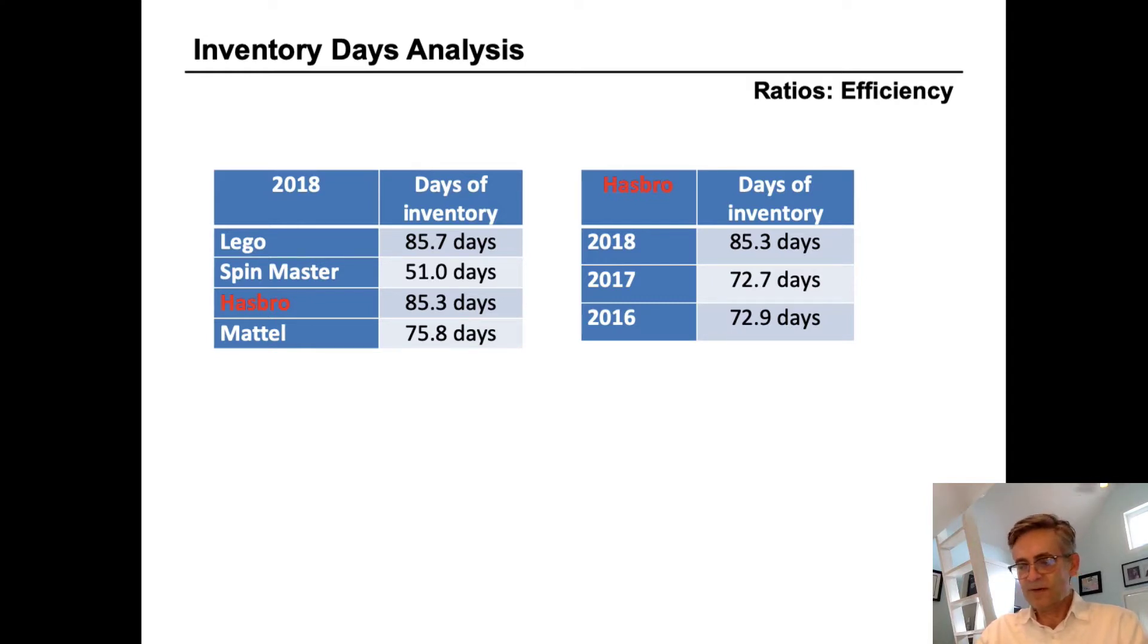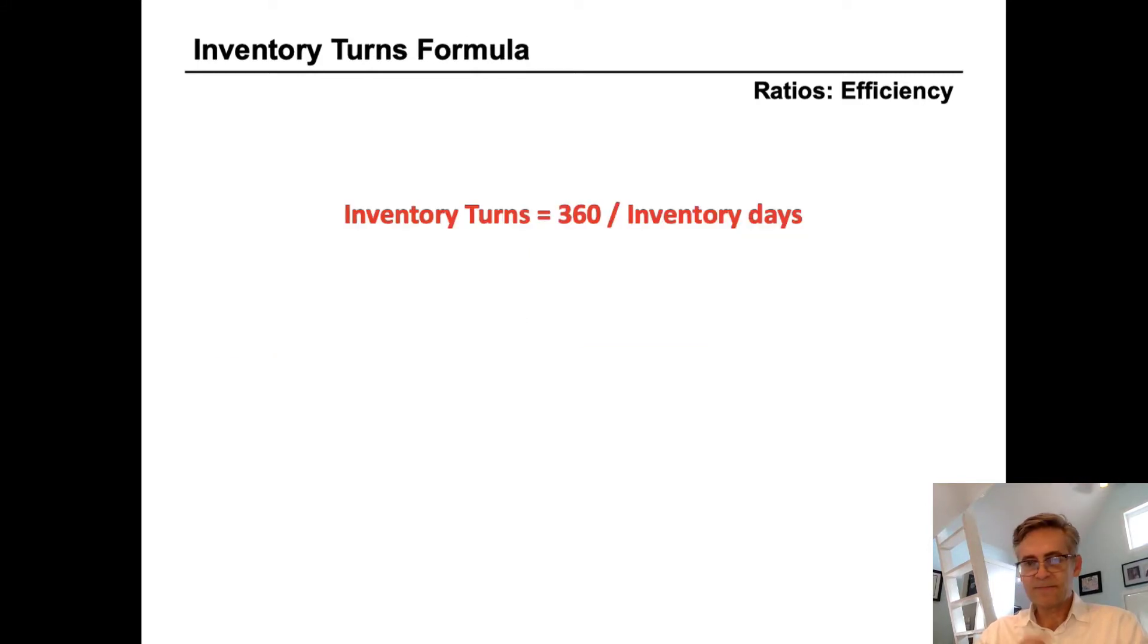So another way to measure inventory is through inventory turns. And the formula for inventory turns is 360 divided by inventory days. And what we're effectively calculating here is the number of times per year that a company can sell all of its inventory on average.